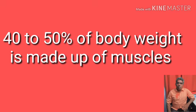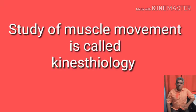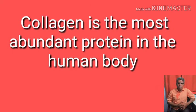Nearly 40–50% of the body weight is made up of muscle tissue, and this muscle is mesodermal in origin. Each muscle fascicle is made up of many muscle fibers, and in this muscle fiber there is a protein called collagen. Collagen is the most abundant protein present in the human body. It is also called the aging protein because with age, the synthesis of collagen is reduced. Collagen is also present in tendons along with muscles.